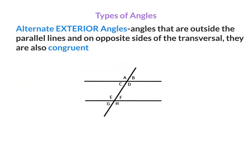Alternate Exterior Angles. These are angles that are outside the parallel lines and on opposite sides of the transversal. They are also congruent. I'll label the transversal T. Angle A and its alternate exterior is angle H, because they are on opposite sides. Angle B and its alternate exterior is angle G, because they are also on opposite sides. So angle A is congruent to angle H, and angle B is congruent to angle G.